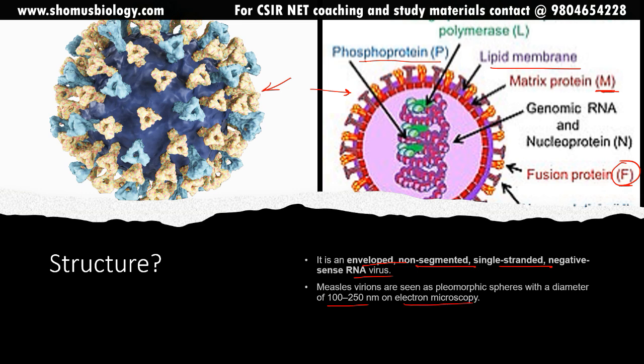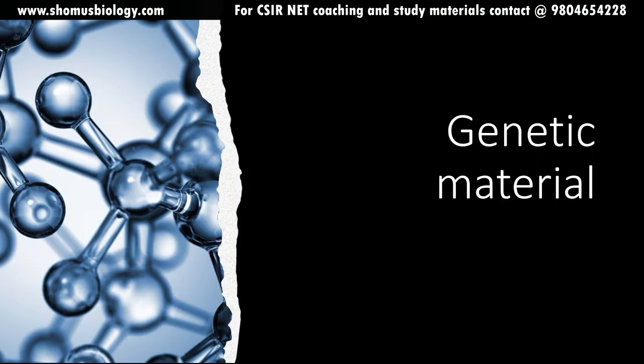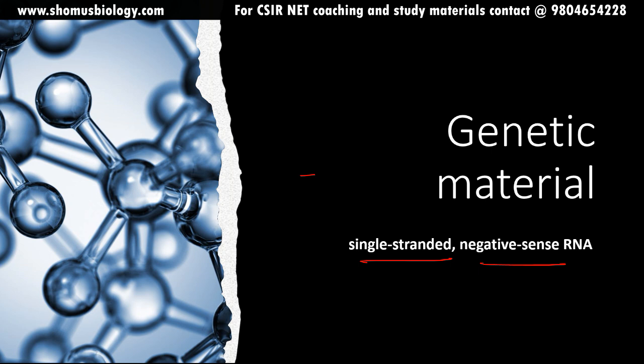On electron microscopy it measures 100 to 250 nanometers, making it a moderate to large size virus. Measles virus encodes at least eight structural proteins, designated F, C, H, L, M, N, P, and V — each with different roles in building the viral structure. The genetic material is single-stranded negative-sense (minus-sense) RNA.